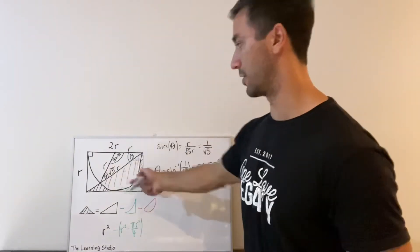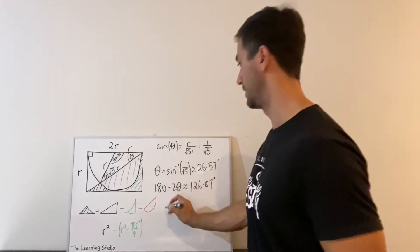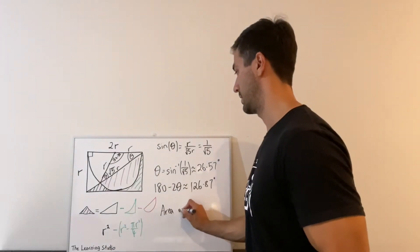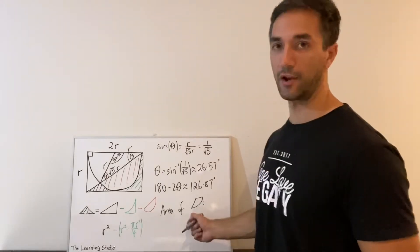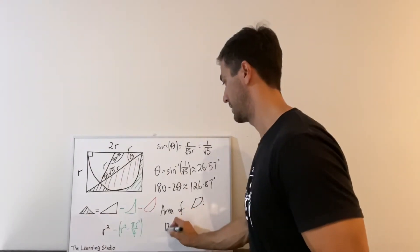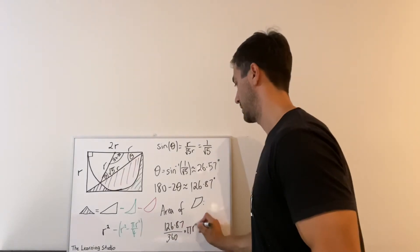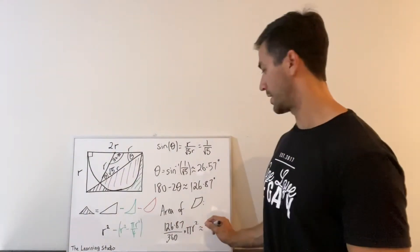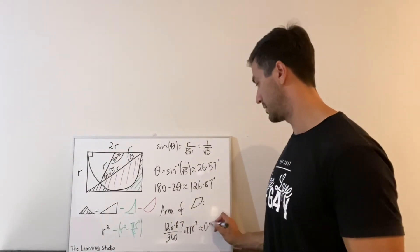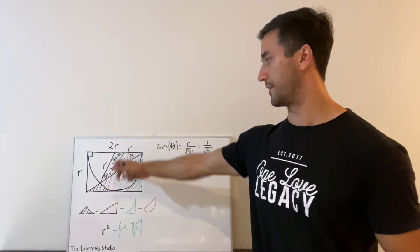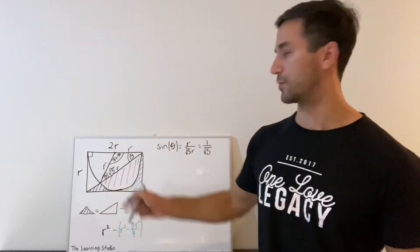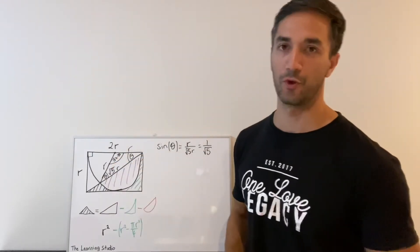All right, so now we can work out the area of this sector. So the area of the sector is going to be A, which is approximately... All right, so now that we know the area of that sector, the only thing left to do is work out the area of this triangle so we can remove it.